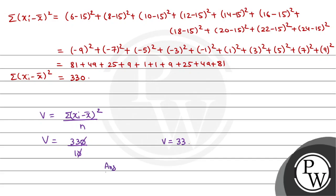So our answer will be: variance of given data is 33. Okay, so this is our answer. Hope you understood it well. Best of luck!